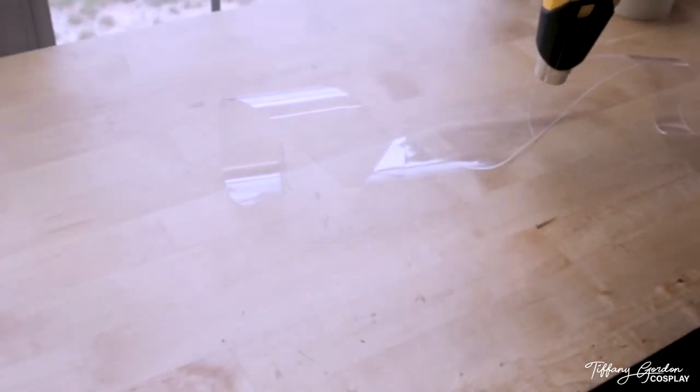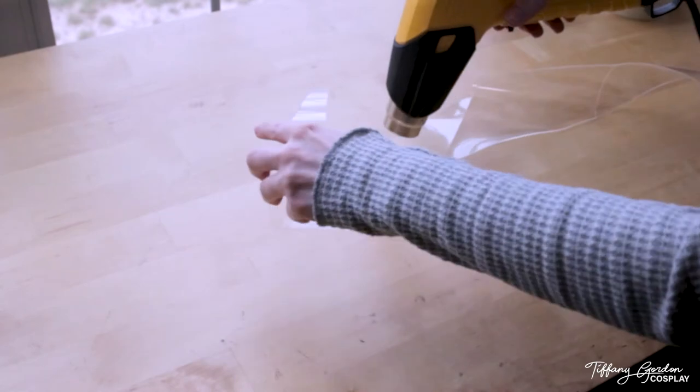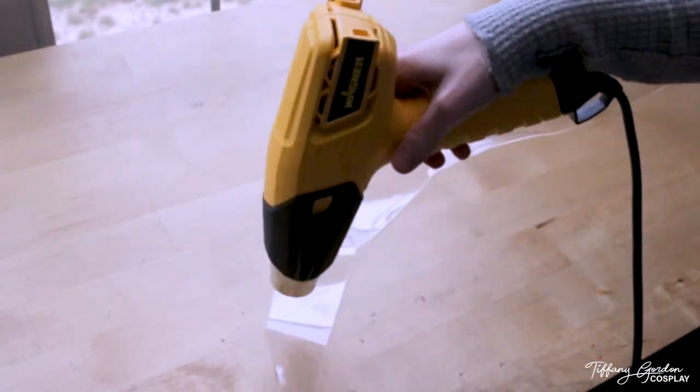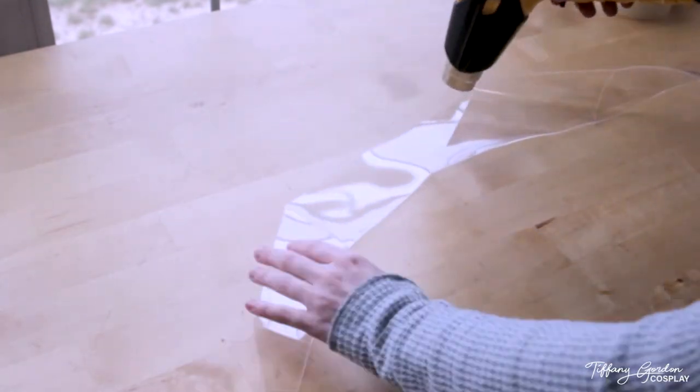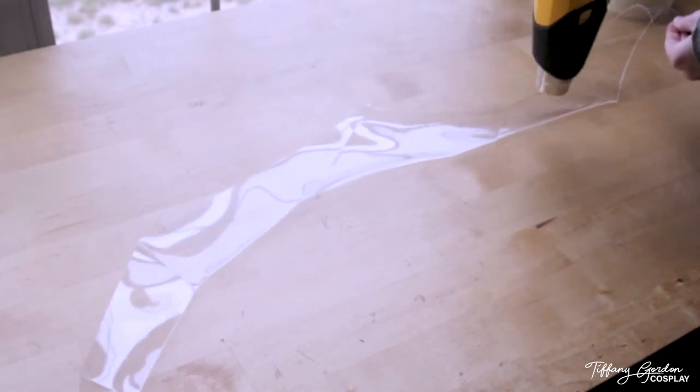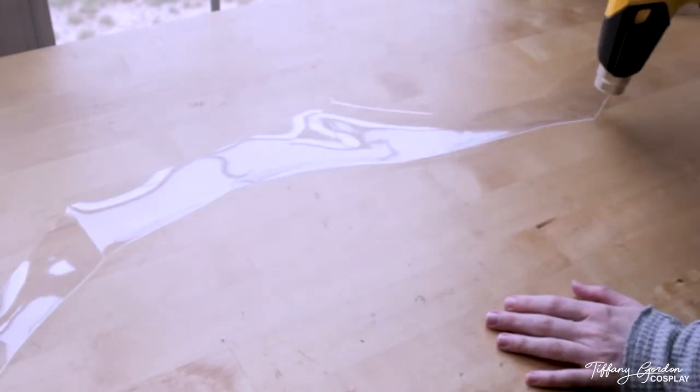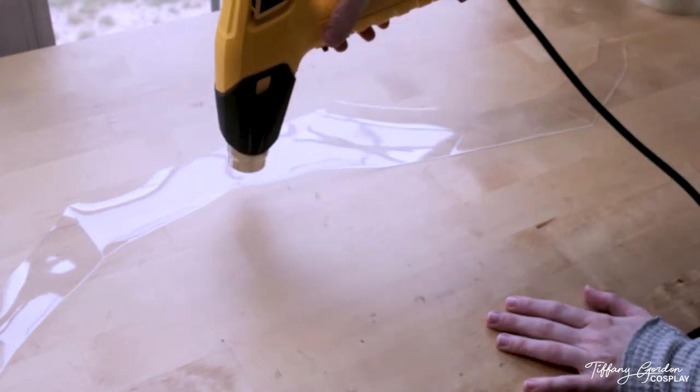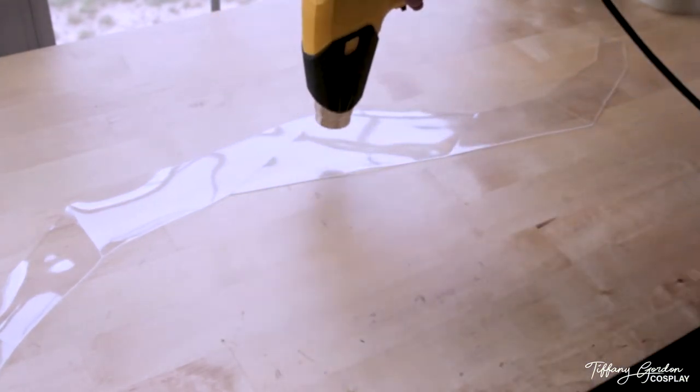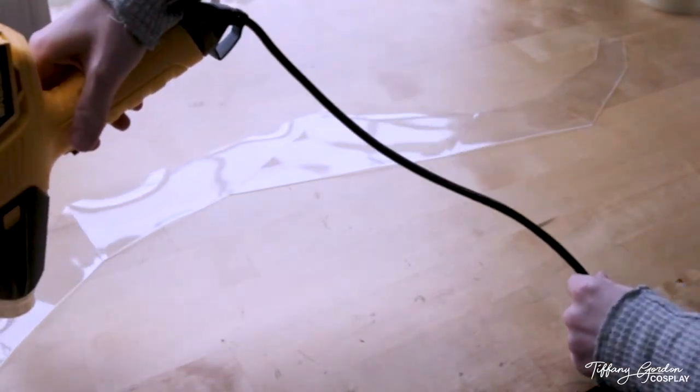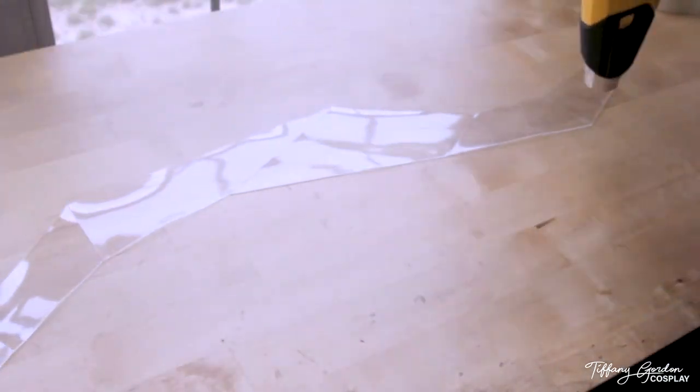To make each of the segments of the tail lay out flat, I used a heat gun to apply heat to the worbla. This is going to activate the worbla's heat temperature and make it so that while it is hot, it's able to move and bend and go flat. And then when it cools off, it'll be hard and flat.